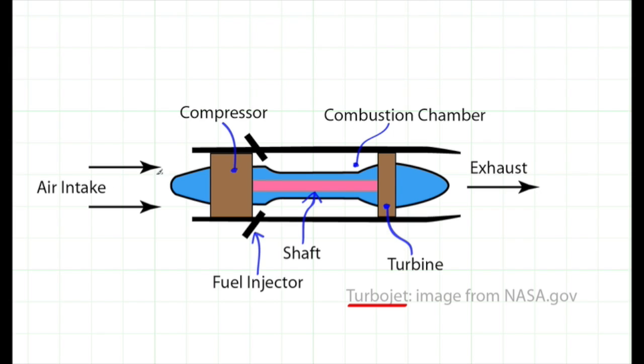This is an image of a turbojet from NASA. Air comes into the jet engine here. There's a compressor which greatly increases the density of the air. Then fuel is injected into the air flow, which again changes the density.